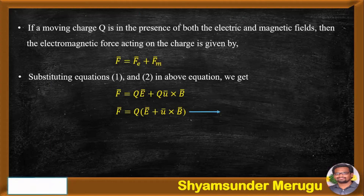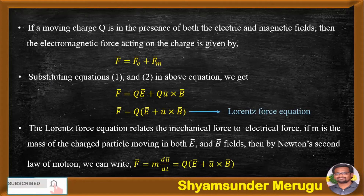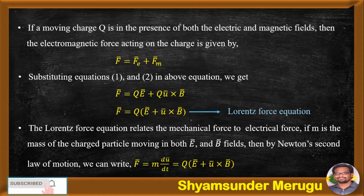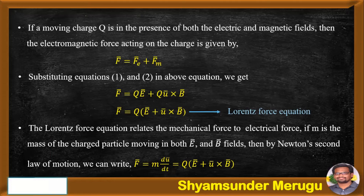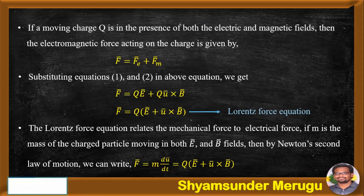This equation is known as the Lorentz force equation. The Lorentz force equation relates the mechanical force to the electric force. If M is the mass of the charged particle moving with velocity in both E bar and B bar fields, then by Newton's second law of motion, we can write F bar equals MA, where A is the acceleration and it can be written as the rate of change of velocity, D U bar over DT. Therefore, relating the mechanical force to the electrical force: F bar equals M D U bar over DT equals Q of E bar plus U bar cross B bar.